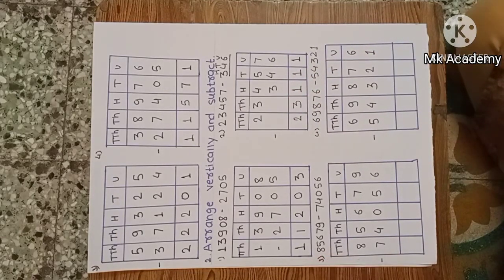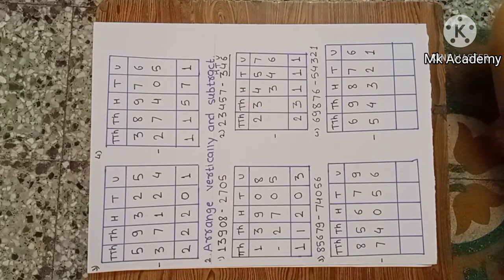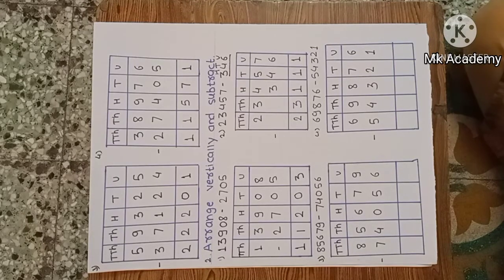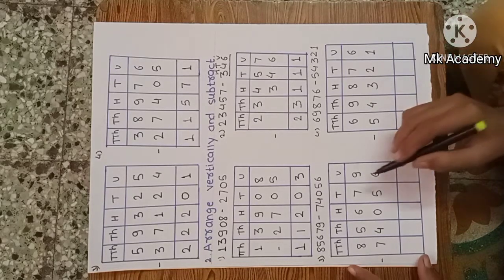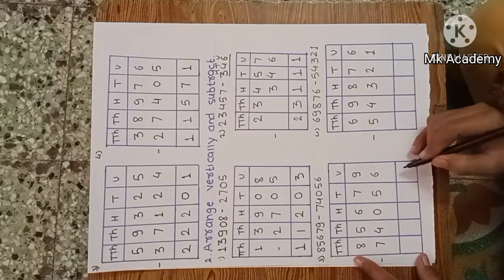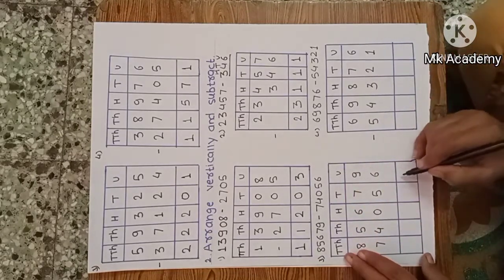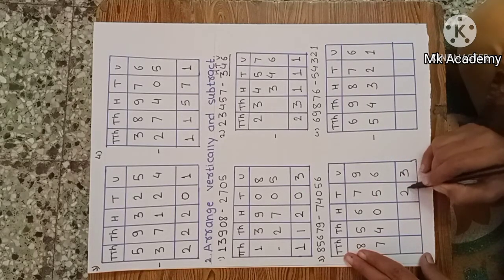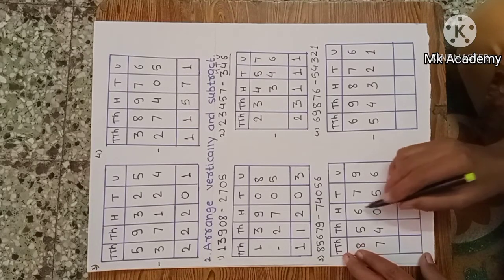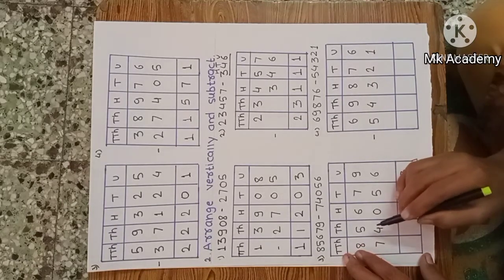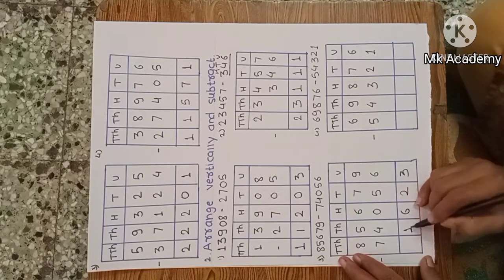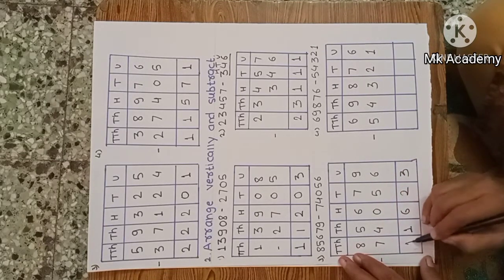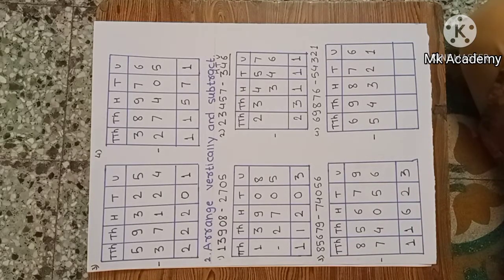Third example: eighty-five thousand six hundred seventy-nine minus seventy-four thousand and fifty-six. Start from unit place: 9 minus 6, three units remaining. Tens: 7 minus 5, two remaining. Hundreds: 6 minus 0, six remaining. Thousands: 5 minus 4, one remaining. Ten thousands: 8 minus 7, one remaining. The answer is eleven thousand six hundred and twenty-three.